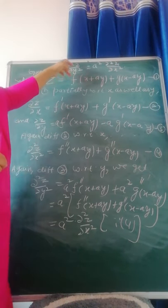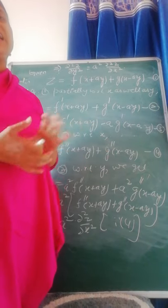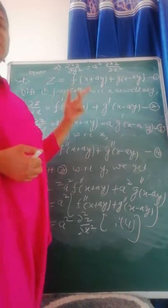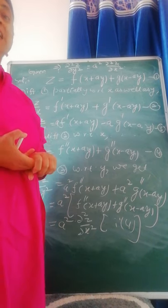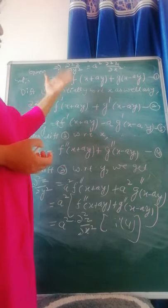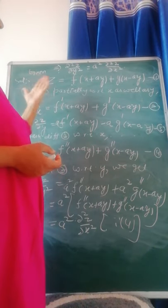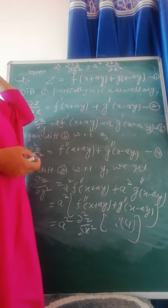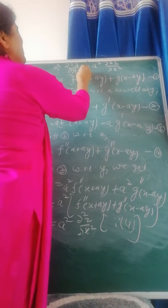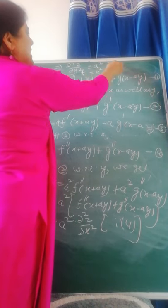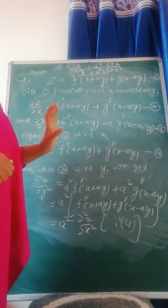This is the partial differential equation with f and g eliminated. Now, you know that ∂²z/∂y² is denoted by t, and ∂²z/∂x² is denoted by r. So we can write: t = a²r. This is the required partial differential equation.